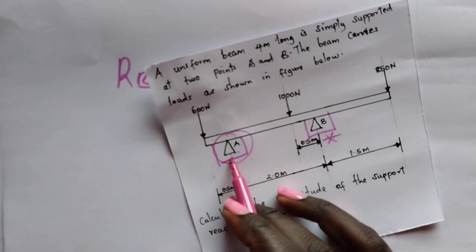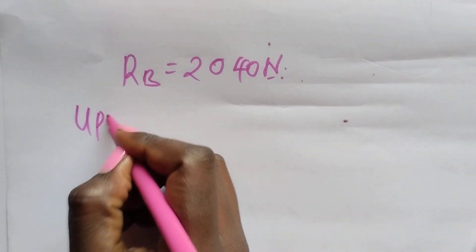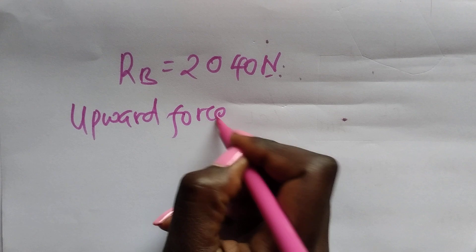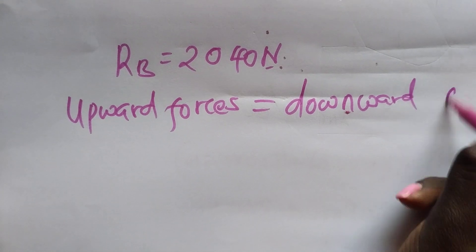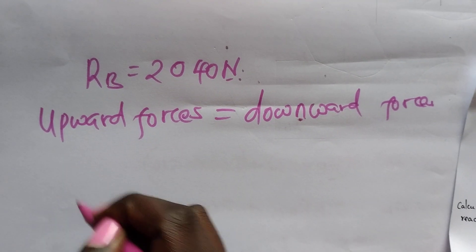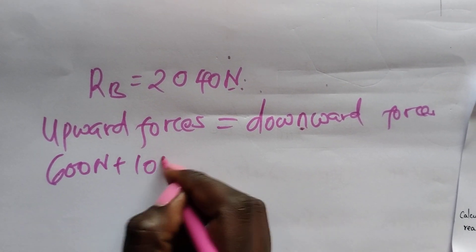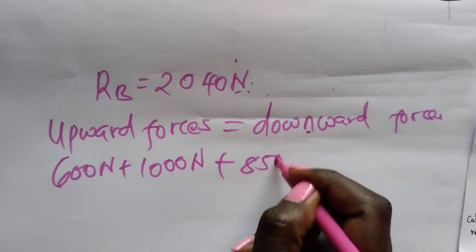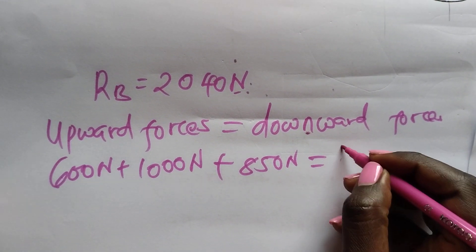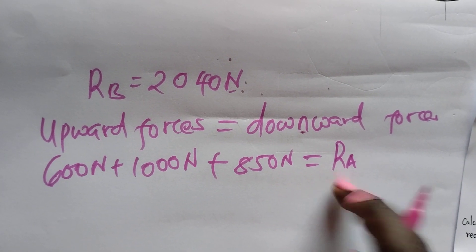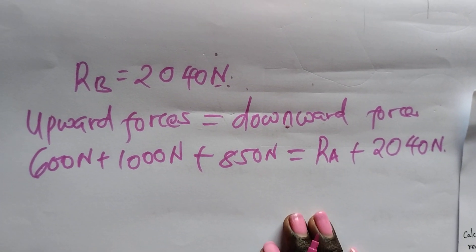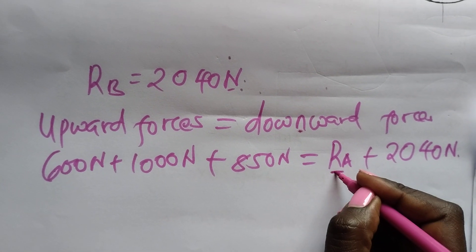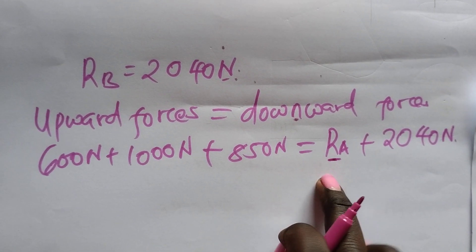So our reaction B is 2,040 newtons. Now we were asked as well to get the magnitude of reaction at point of support A. We're using the law where we once said that all upward forces should be equal to summation of all downward forces. Now the forces that were acting downwards were 600 newtons plus 1000 newtons plus 850 newtons should be equal to upward forces, which is now reaction A, our point of support, plus RB, which we calculated previously as 2,040 newtons. Now all of them are in newtons, that way we'll just get our RA in terms of newtons.